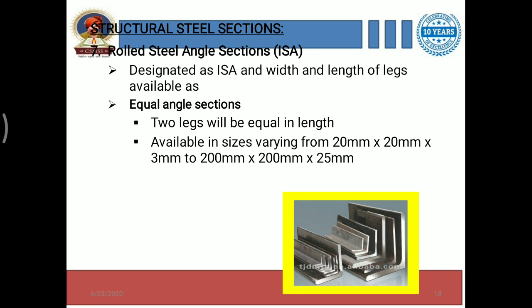Within this range, angles are available in sizes such as 50 x 50 x 10 mm, 100 x 100 x 12 mm, 150 x 150 x 16 mm, and likewise. These are the number of sizes available for equal angle sections.